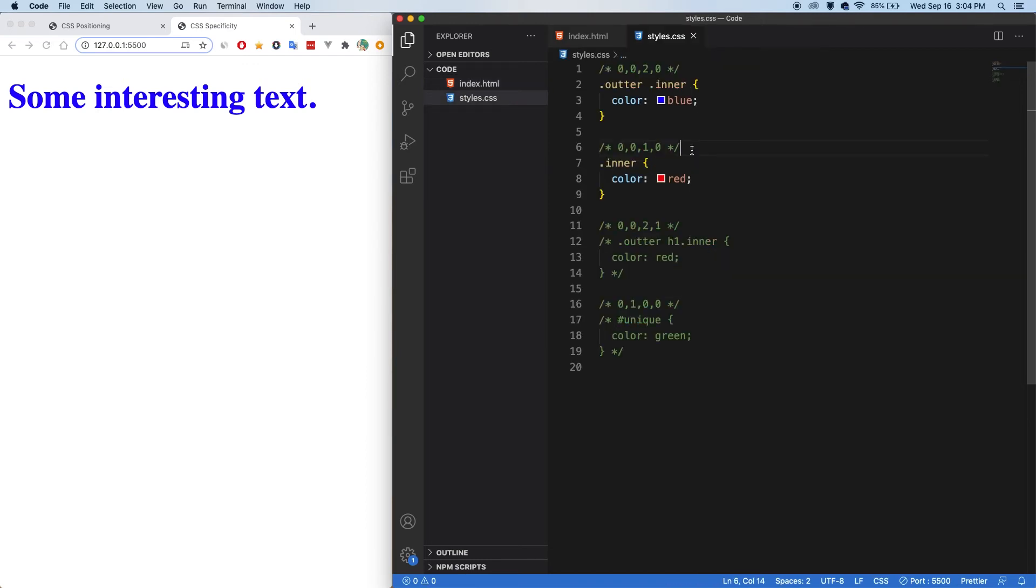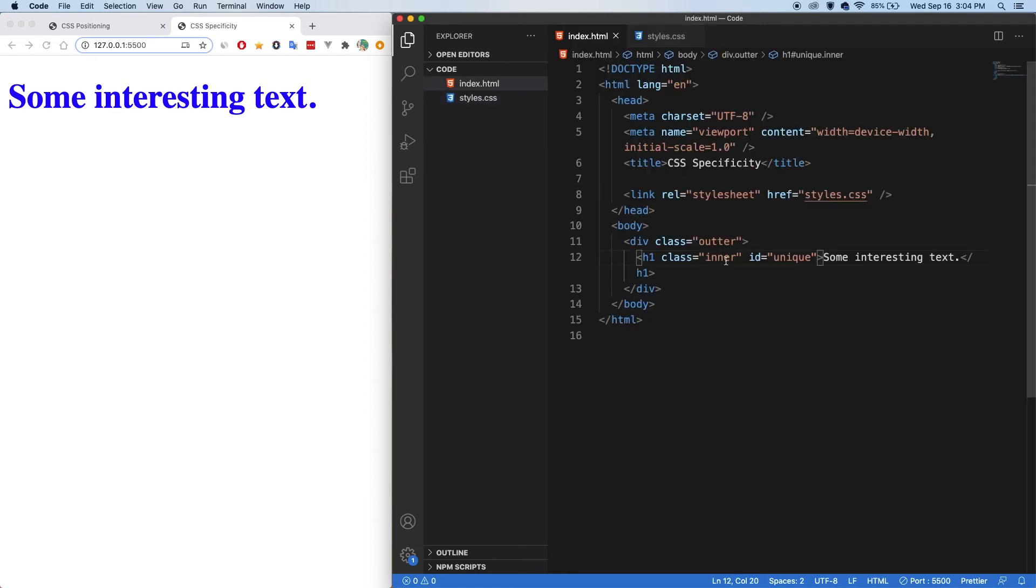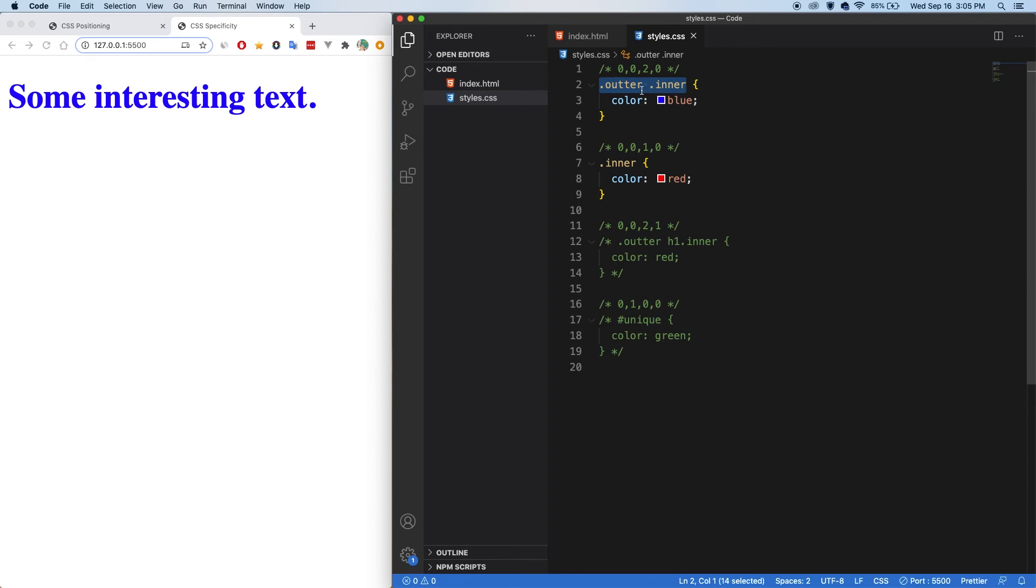So in these examples, I've written out the numeric score for these selectors. You can see here that there are two different classes. So the inner and the outer, where you're targeting the inner and outer. And in this example, we can see that it has two different classes and that's why it has two there. And in the one below it, you're only selecting the inner class and so therefore it only has one here. And that's why the blue is being applied right now.